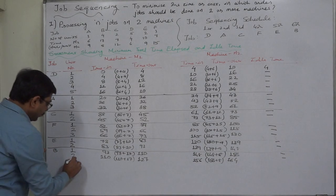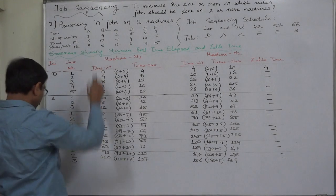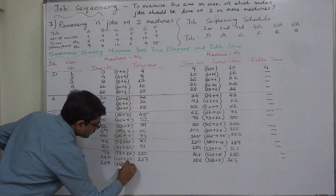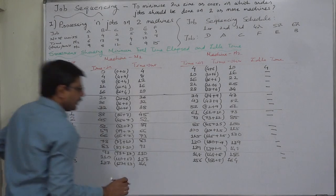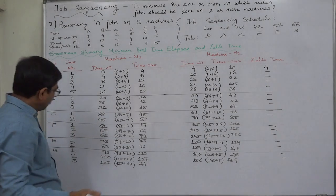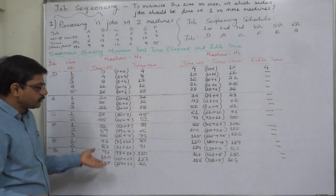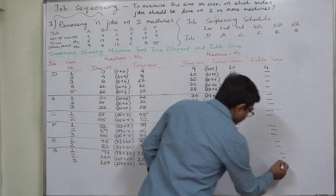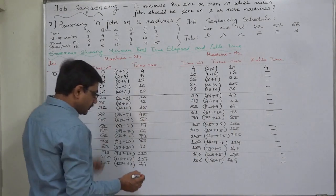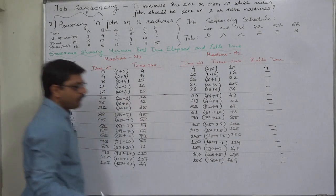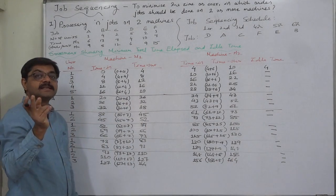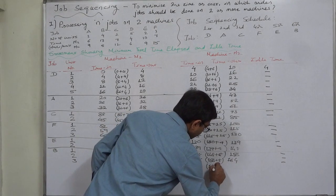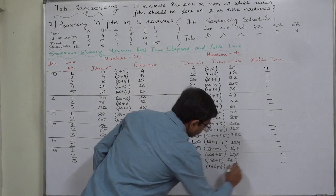Third unit of B: B has 4 units. Time in is 127, 127 plus 17 equals 144. The machine is busy processing the previous unit, so the unit or job is waiting — no idle time for machine 2. 144 or 164, whichever is later: 164 becomes time in, 164 plus 8 equals 172.